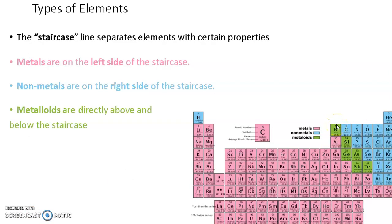There are different types of elements in a periodic table. When you're looking at a periodic table, you can see a visible staircase line right here, if you're following. Okay, this staircase line separates elements with certain properties.